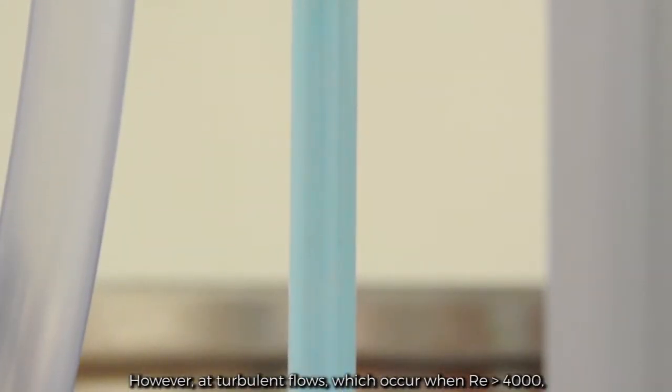However, at turbulent flows, which occur when Reynolds number is greater than 4,000, the dye will be fully mixed throughout the pipe.